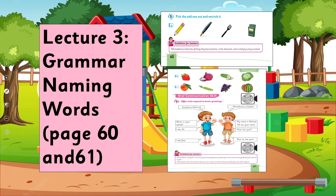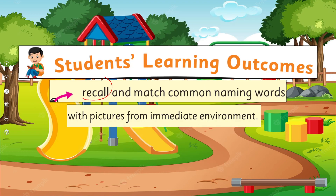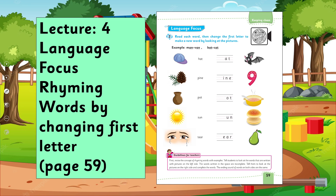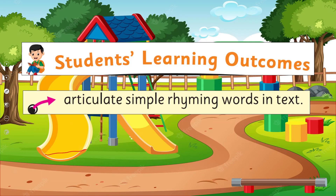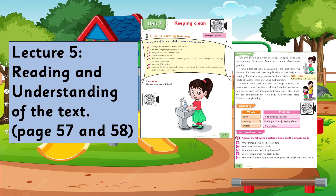Lecture 3, under the title of Grammar, we learn about naming words, and we'll cover the SLO to recall and match common naming words with pictures from the immediate environment. Lecture 4, under the title of Language Focus, we'll learn about rhyming words by changing the first letter, and we'll cover the SLO to articulate simple rhyming words in text.